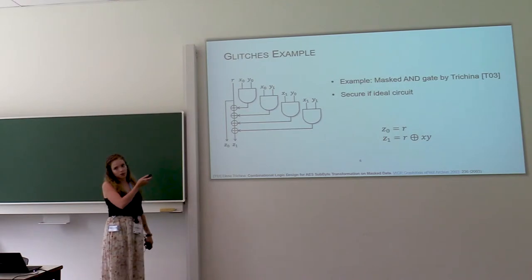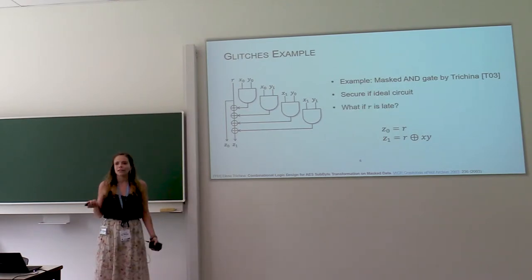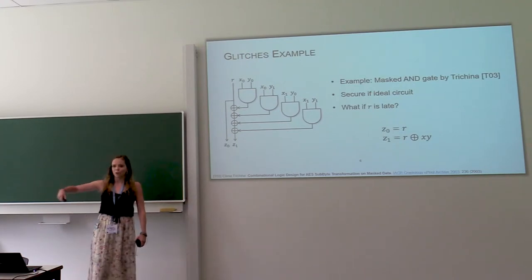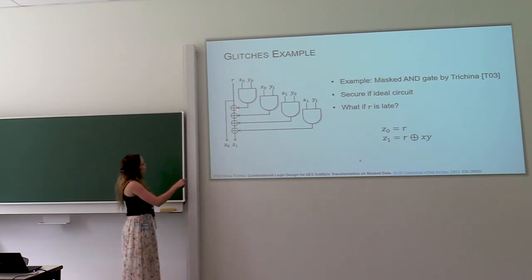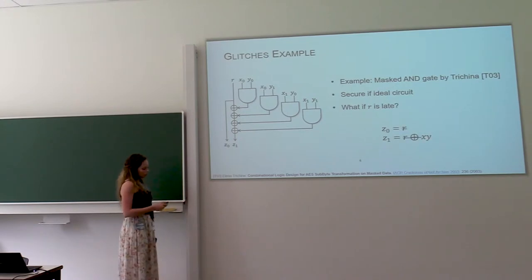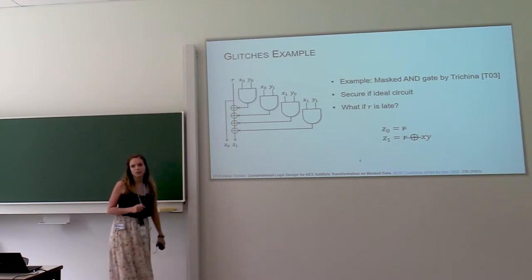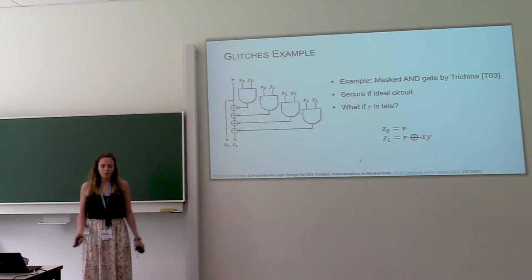Imagine, so this is secure if the circuit is ideal. But imagine that R is late because it has a longer path to travel in your circuit. So what would happen is that you are computing an unshared product x, y. So that's a problem.